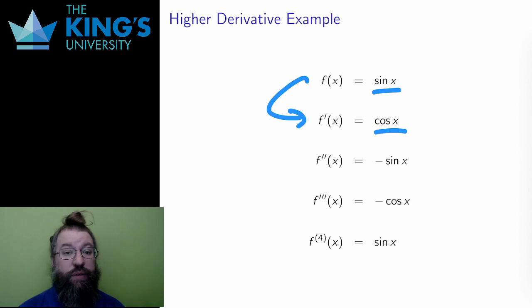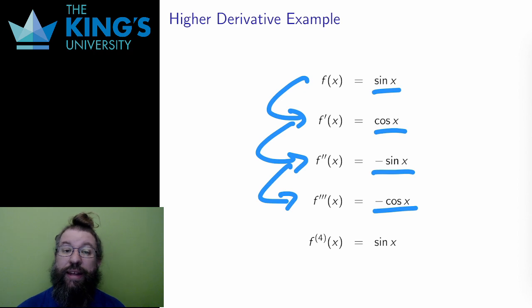Then I take the derivative again, so the second derivative of sine is negative sine. Then I can take the derivative again, so the third derivative of sine is negative cosine. And finally, I take the derivative a fourth time, and the fourth derivative of sine is just sine again.